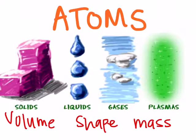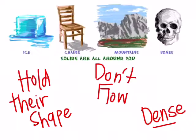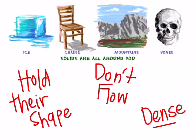In different states of matter the atoms act differently. First we're going to talk about solids. Solids hold their shape and don't flow so they won't take the shape of their container. They're also very dense. In solids the atoms are packed together tightly. The molecules and the atoms are actually still vibrating even though it doesn't appear that a solid is moving. At a very small atomic level everything is moving. Examples of solids are rocks, fur, ice, and powders.